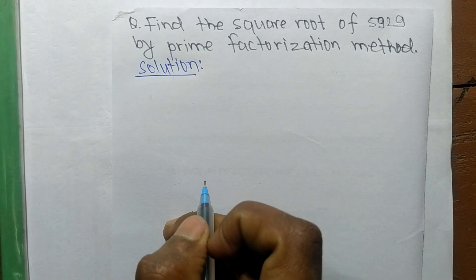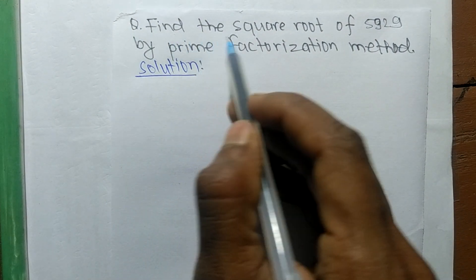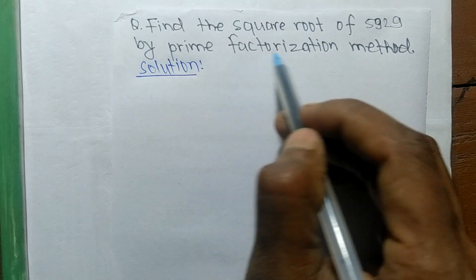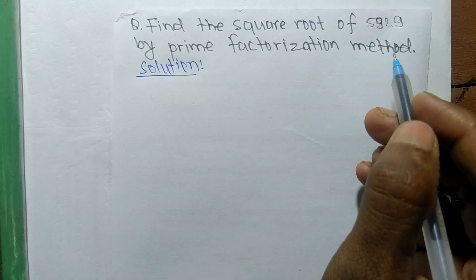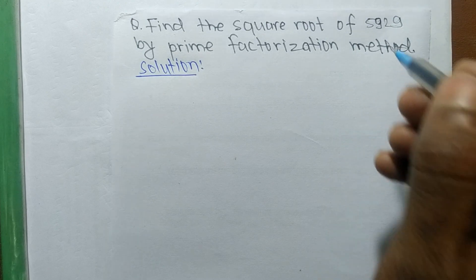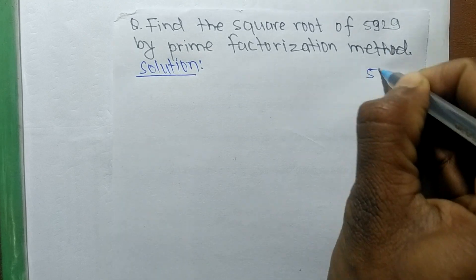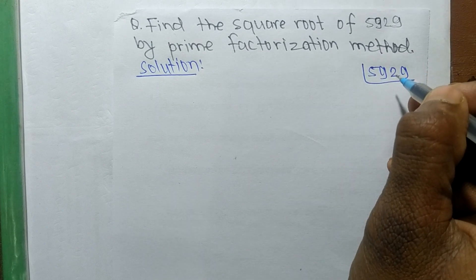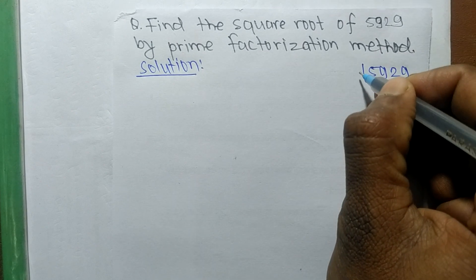So today in this video we shall learn to find the square root of 5929 by prime factorization method. To find out a square root, first we will find out the prime factors of 5929.